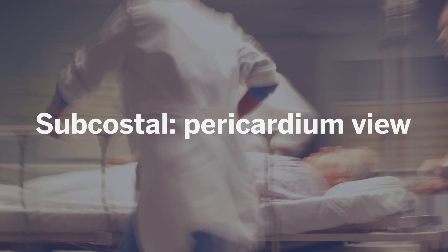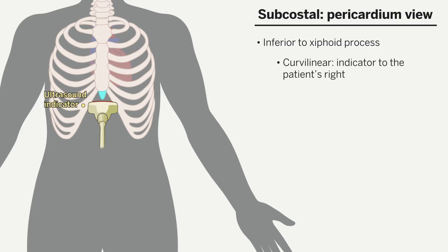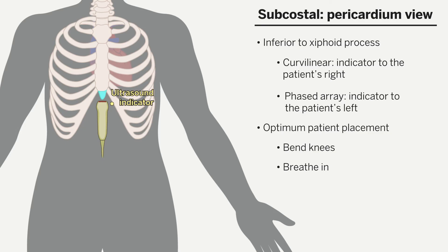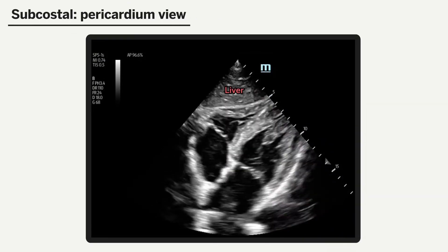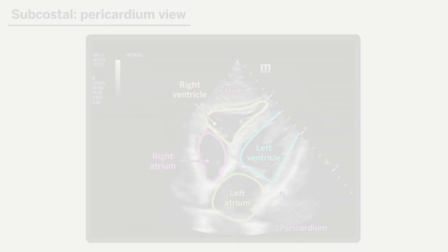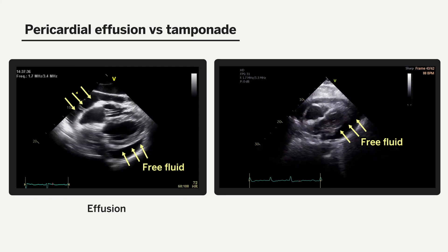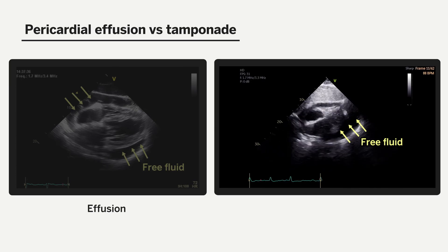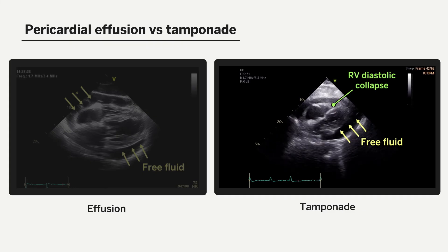To obtain the subcostal view, we place the probe just inferior to the xiphoid process. If using the curvilinear probe, the indicator faces to the patient's right; however, if using the phased array probe, the indicator faces to the patient's left. It is often helpful to have the patient bend their knees and take a breath in to optimize this view, and the ultrasound probe should be angled slightly anteriorly. In this view, we should be able to identify the liver, pericardium, and the two atria and two ventricles of the heart. This view is particularly useful for evaluating for free fluid in the pericardial space, as seen in these videos depicted by the yellow arrows. Both video clips demonstrate circumferential fluid collection, and the video to the right additionally depicts right ventricular diastolic collapse, suggesting possible tamponade physiology.